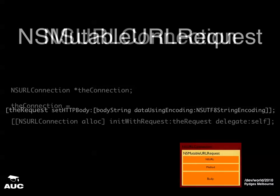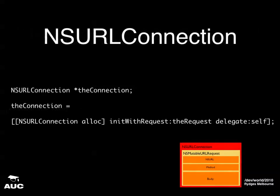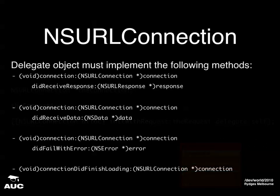The final thing you need before you send off a request is an NSURLConnection. That object is like a wrapper which interacts with the network services on your iPhone. It'll send off your request, and it will handle all the subsequent data that comes back from the service via a few important delegate methods.